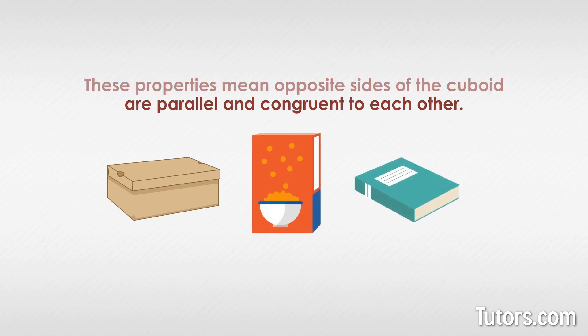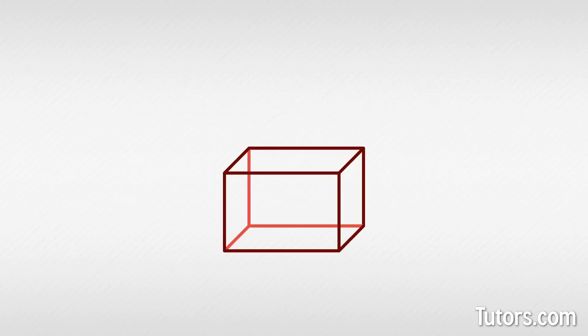To find the volume, V, of any cuboid, the formula is V equals length times width times height, or depth. Because the object is three-dimensional, volume is expressed as a cube, the third power, of whatever linear unit you used: cubic meters, cubic feet, cubic yards, and so on.